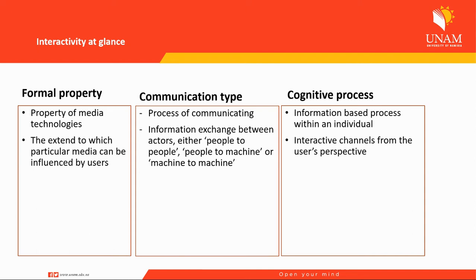Then you have the dimension of interactivity of communication type, which deals with the process of communicating — the information exchange between actors, which can be person to person, between a person and a machine, or a machine and a machine. You can see the distinction between the formal property and the communication type: the communication type focuses on the process of communicating.